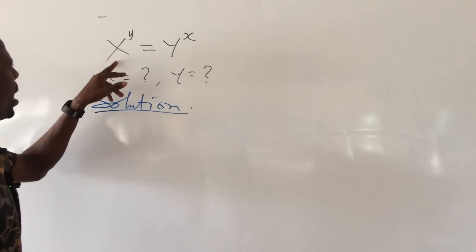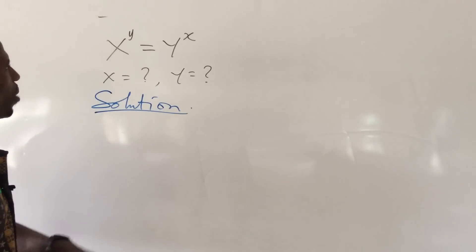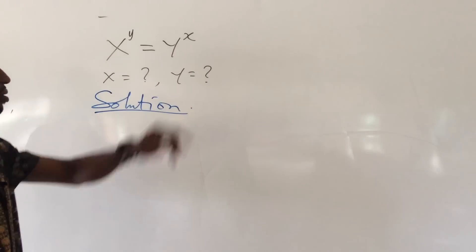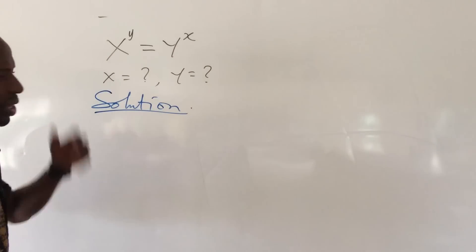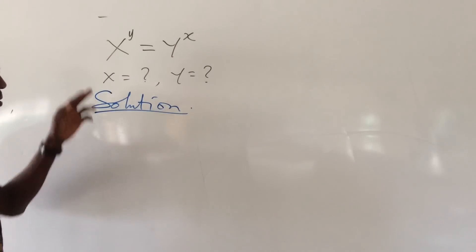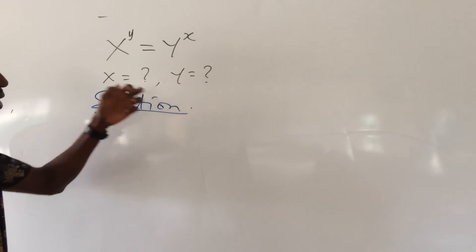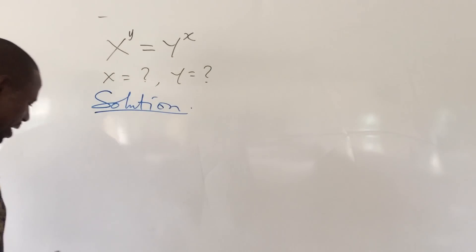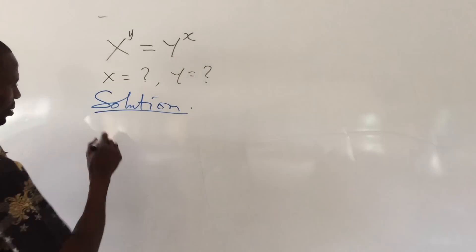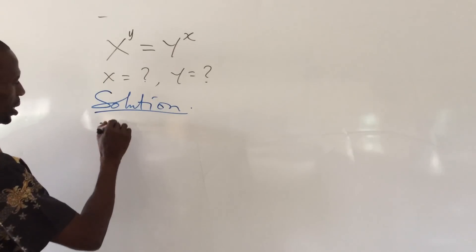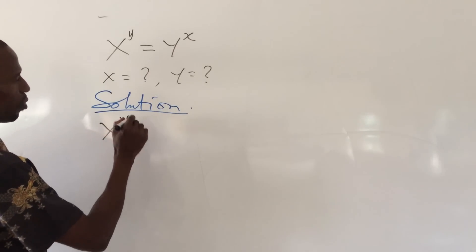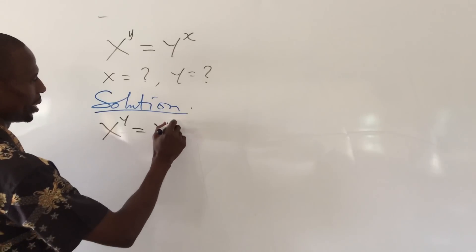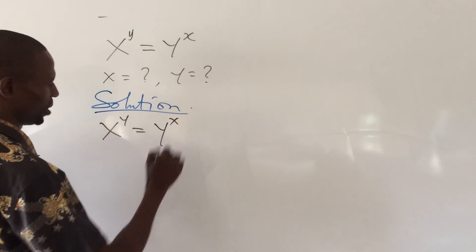The question says x to the power of y equal to y to the power of x. What then will be the value of x and also y? So we take down our question, which is x to the power of y equal to y to the power of x.